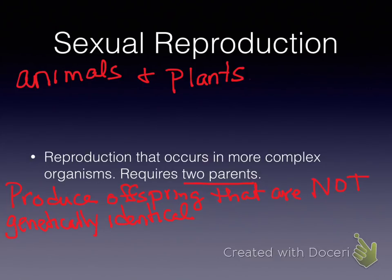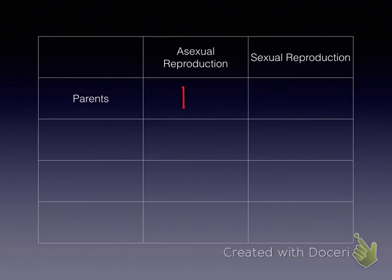Make sure you have those two definitions written down — pause or rewind if needed to get everything written in red plus what was already on the slide. Now we're going to look at this chart, which compares asexual and sexual reproduction. You can see the advantages and disadvantages laid out next to each other. The first left-hand column is what we're comparing, then you have the asexual and sexual reproduction columns.